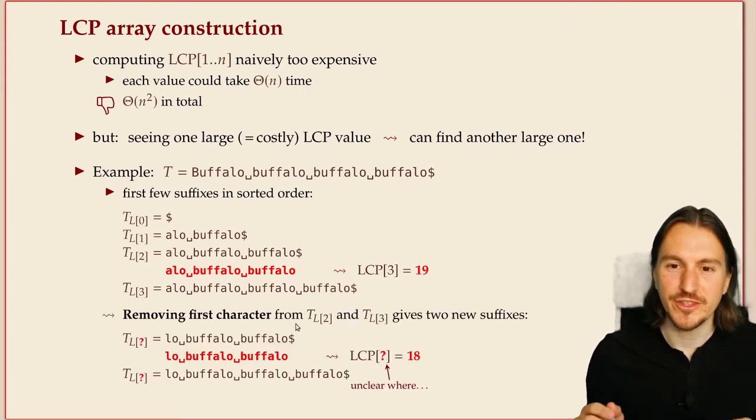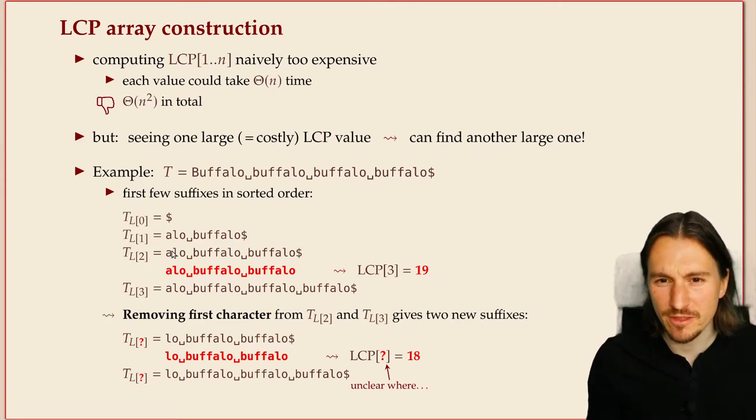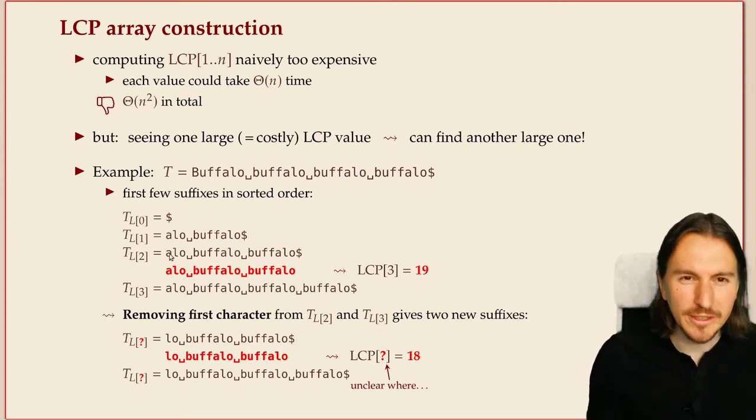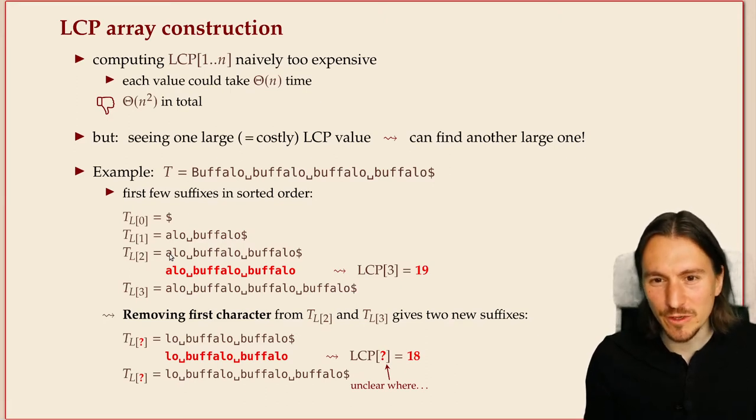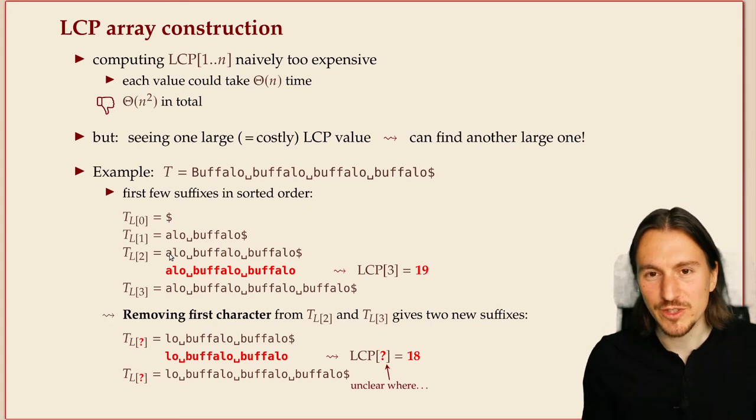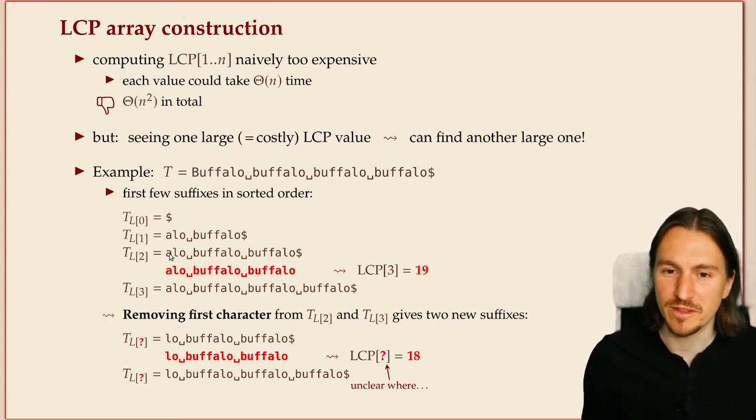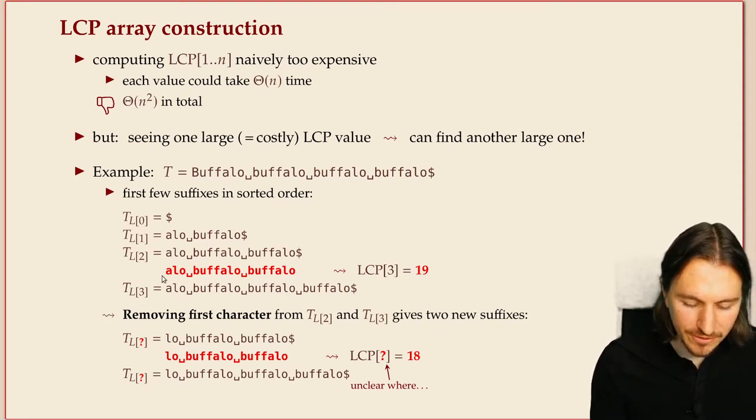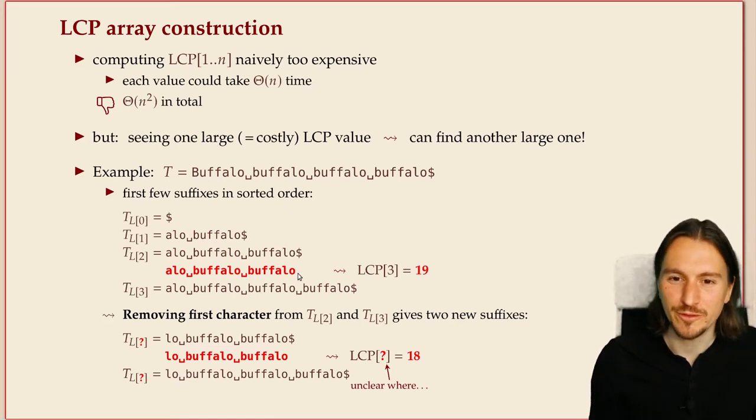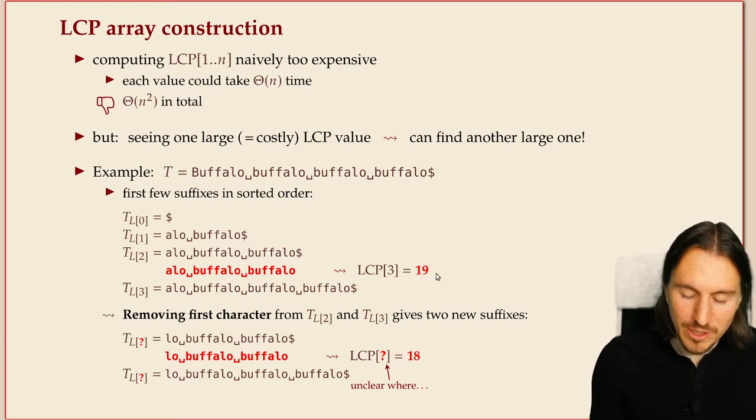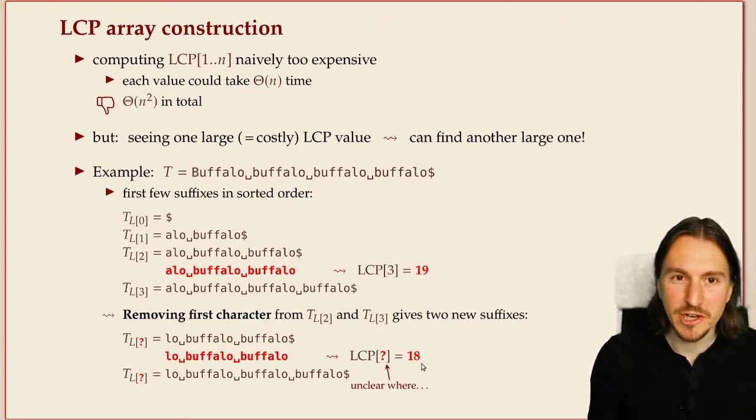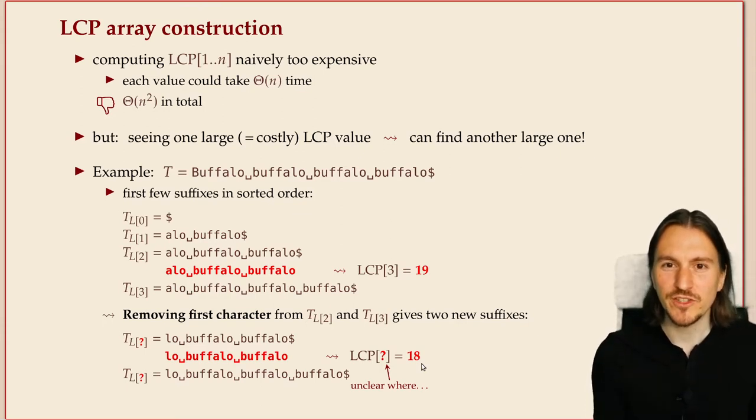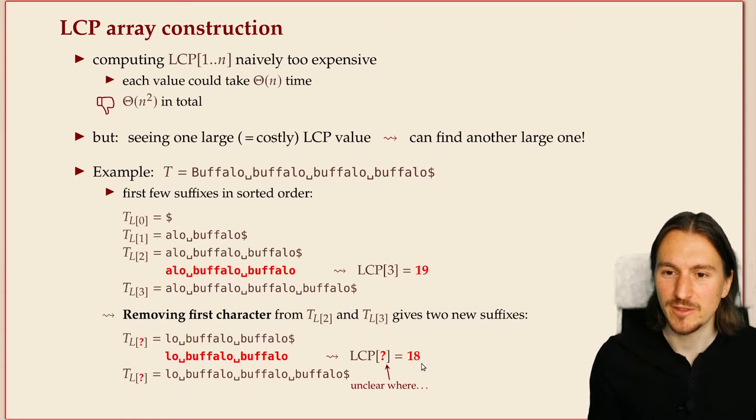If we chop off the first character of those two suffixes, we get another suffix, obviously. It's not so clear where in the sorted list it is, but it's clearly the suffix that starts one character later. So if we have the suffix array and the inverse suffix array, we can find where they are. And just by definition, if these two share this long common prefix, if I take off the first character on both, they still share the same common prefix except for the first character that's gone. So if the LCP entry here was 19, I'm now sharing a prefix of length 18. And I don't have to spend a single comparison to know that, it's by definition, it has to be like that.